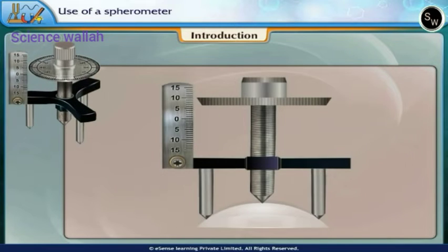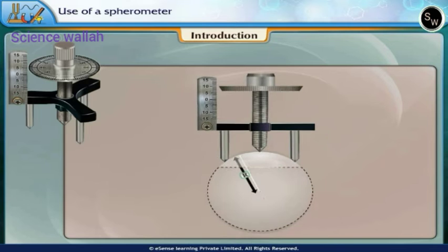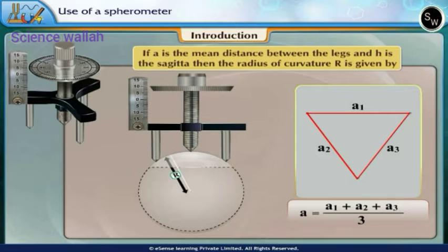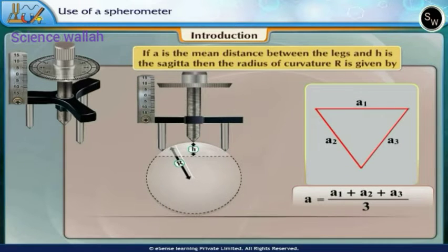A spherometer can be used to measure radius of curvature R of a lens. If A is the mean distance between the legs and H is the sagitta, then the radius of curvature R is given by R = H/2 + A²/6H.